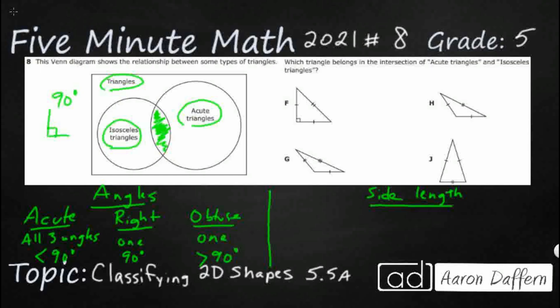And then we have side lengths. So we have first scalene. So scalene is zero equal side lengths. Zero equal side. So all three sides are different lengths.